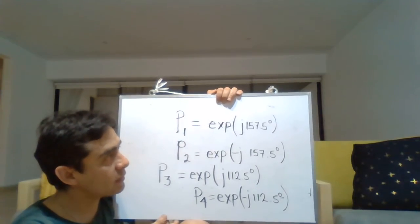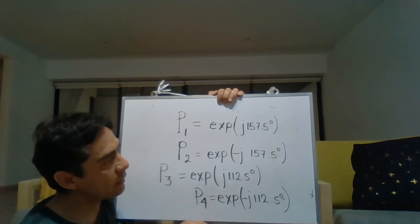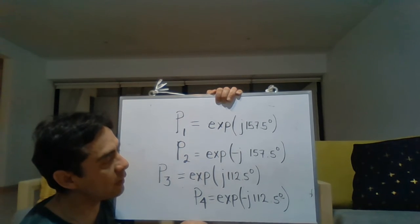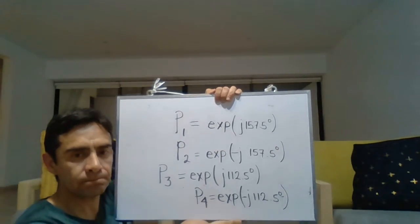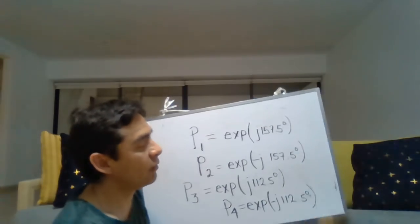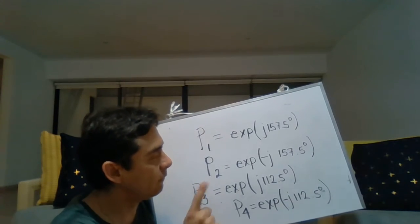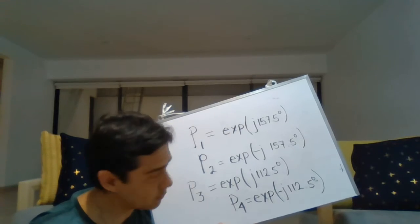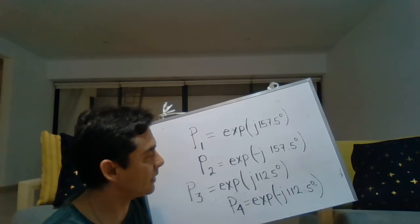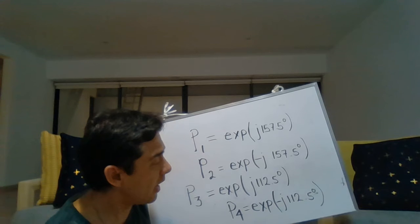We are given four different poles. We have to specify if those poles represent a fourth-order low-pass filter. The answer is yes. We know they represent a fourth-order low-pass filter because we have four poles — any fourth-order filter must have four poles.